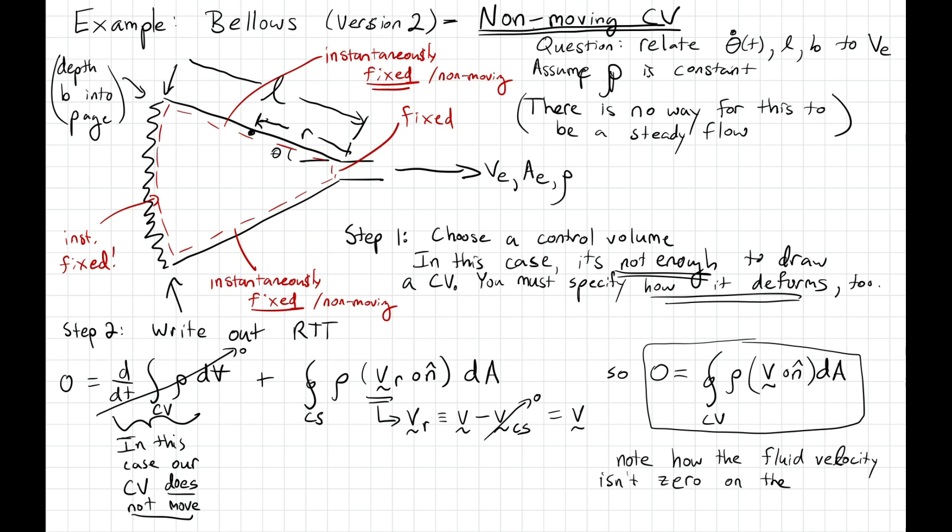Note how in this case, the fluid velocity is not zero on the upper and lower portions of our control surface. Essentially, the upper and lower portions of the bellows are pushing fluid across our control surface in this case, because our control surface does not move with the boundary. So let's evaluate what that surface integral is.